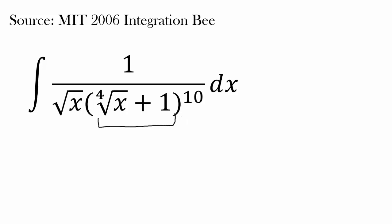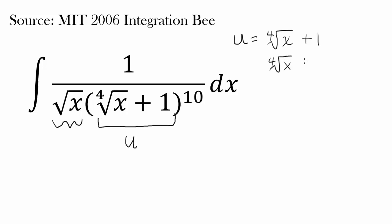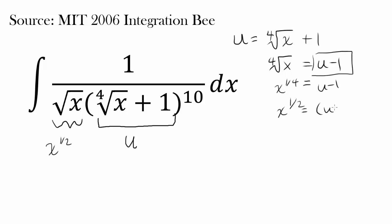You're raising this entire expression to the 10th power, so maybe this entire expression is what we want to let be u. So let's make a substitution: u is equal to 4th root of x plus 1. Maybe that's going to help us out. But you want to relate this expression to square root of x. Well, 4th root of x is equal to u minus 1. Square root of x is x to the 1/2, and 4th root of x is x to the 1/4. So you can square this expression to go from x to the 1/4 to x to the 1/2. So u minus 1 squared is x to the 1/2, or square root of x. So we know what square root of x is — that's u minus 1 squared.